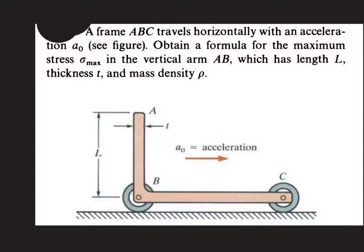In this particular problem we have a frame, a simple frame which travels horizontally with an acceleration of a₀ as shown over here. Then they are asking us to compute what is the maximum stress σ_max in this particular arm, in this vertical arm AB. So all details are provided. I request you to read through the problem slowly, try to solve it on your own. If you're not able to do that, please listen to the rest of my video.